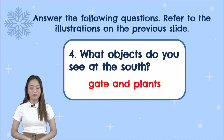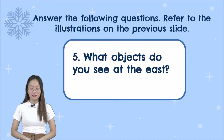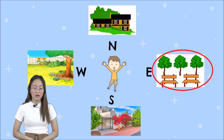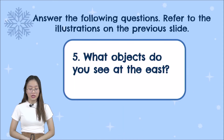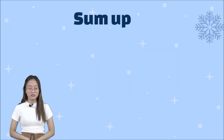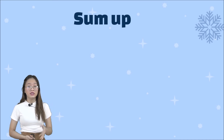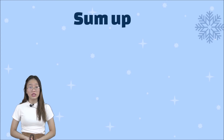For number five, what objects do you see at the east? This is the east part — we have the benches and the trees. So the answer for number five is the trees and the benches. As you can see, using the four main directions, it is easy for us to define the direction of objects using north, south, east, and west.